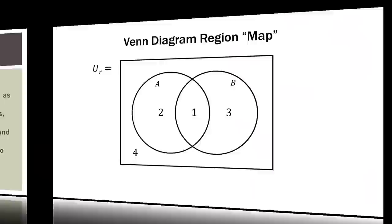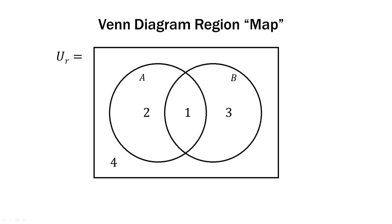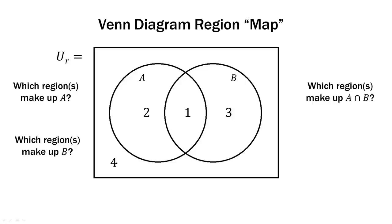So here we have a Venn diagram with two sets that overlap and intersect in the middle. I've gone ahead and split the Venn diagram into discrete regions. The intersection in the middle is region 1. Everything that's just in A is region 2. Everything that's just in B is region 3. And everything outside of A and B is region 4. So we can ask some questions: which regions make up A? Which regions make up B? Which regions make up A intersect B? And which regions make up A union B?